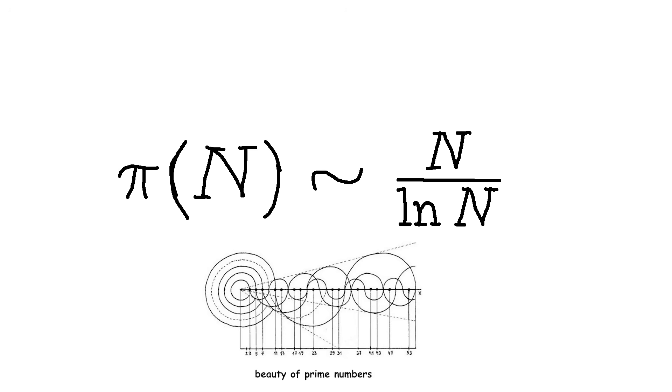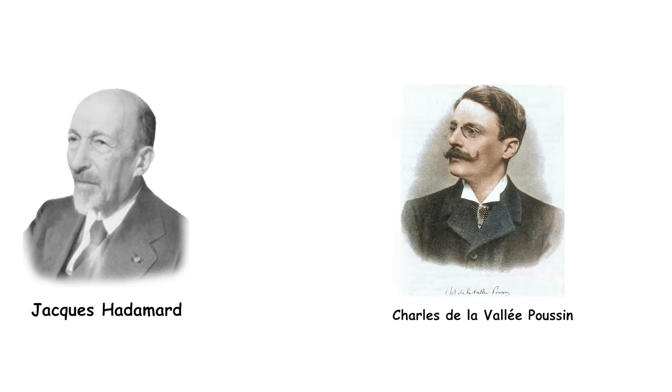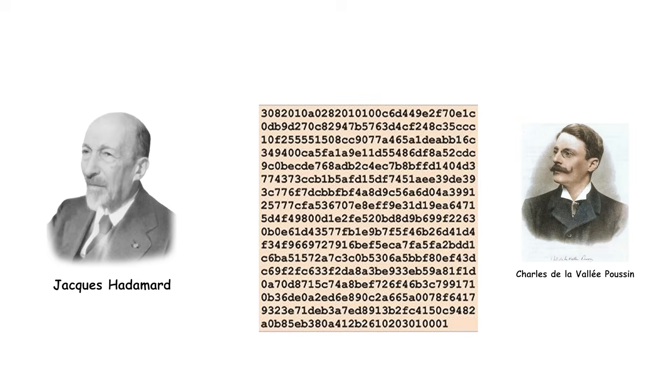This theorem was independently proven in 1896 by two mathematicians, Jacques Hadamard and Charles de la Vallée-Poussin. Their proofs built on earlier ideas about prime numbers. The Prime Number Theorem is very useful in practice. It helps computer programs that work with prime numbers, and it is fundamental to methods for testing whether a number is prime, which is crucial for cryptography and security. While the theorem has been restated and simplified over the years, its importance in mathematics and computer science has only grown since it was first proven over 120 years ago.